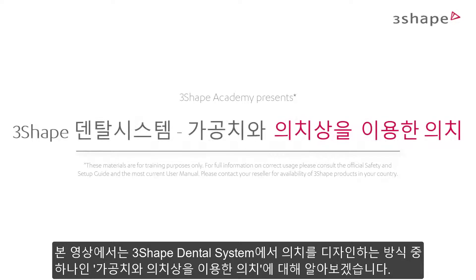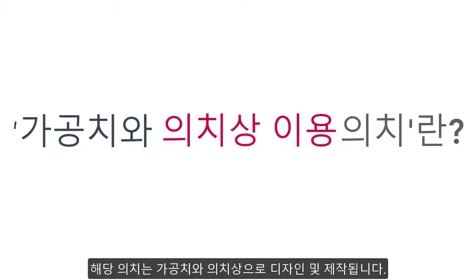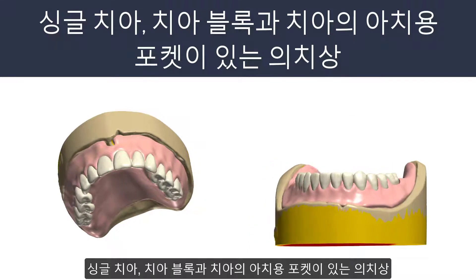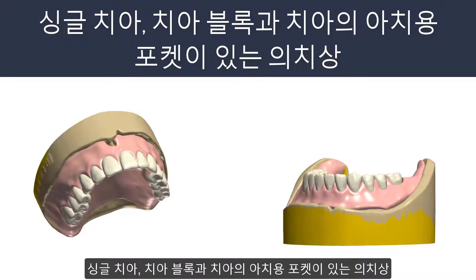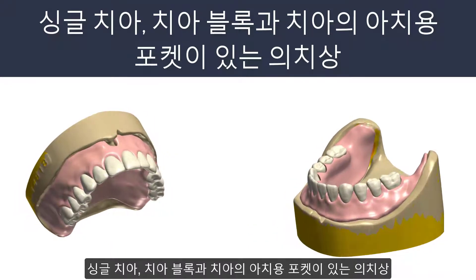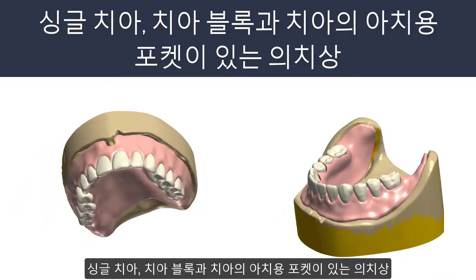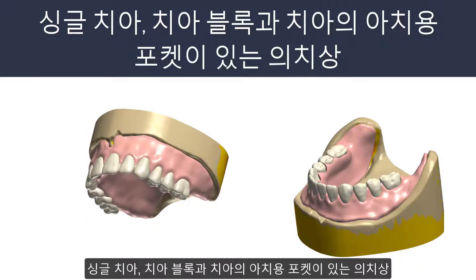In this video we will introduce you to the Base with Design Teeth, which is one of the assembling types when designing dentures in the 3-shaped dental system. This is a type of denture restoration which is designed and produced as two pieces: the base with the pockets for single teeth, the teeth blocks and arches of teeth. The used teeth are modified with the help of additional tools.